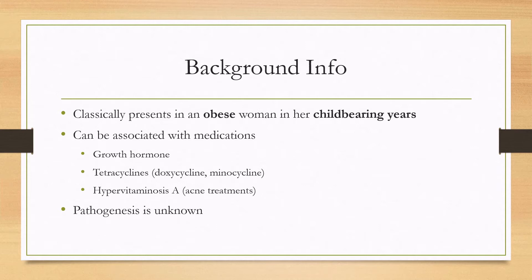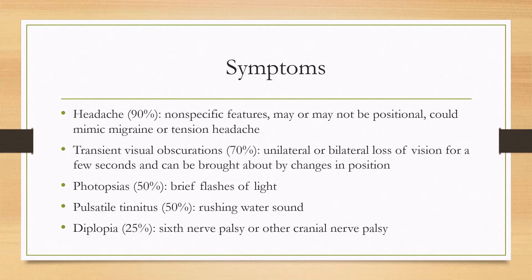There are other medications as well. The primary cause and pathogenesis of the disease is not known. In terms of symptoms, the most common symptom is headache. This headache is very nonspecific; it may or may not be positional and can mimic other headaches such as migraines or tension headaches. The next most common symptom is transient visual obscurations, occurring in around 70% of patients — these can be either unilateral or bilateral losses of vision that usually last a few seconds and can be brought about by changes in position.